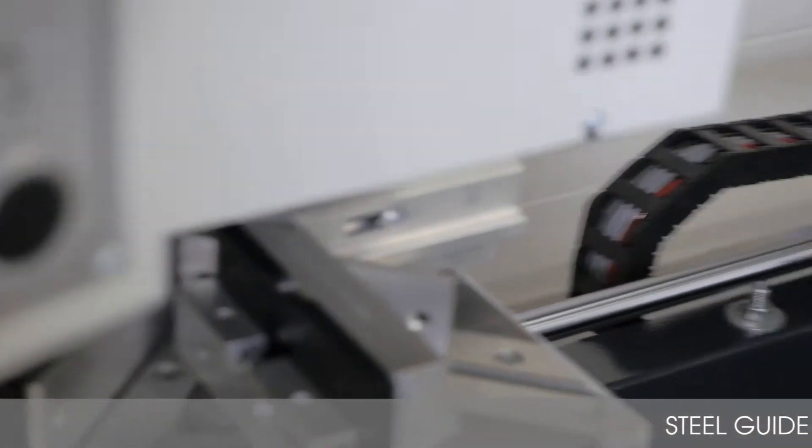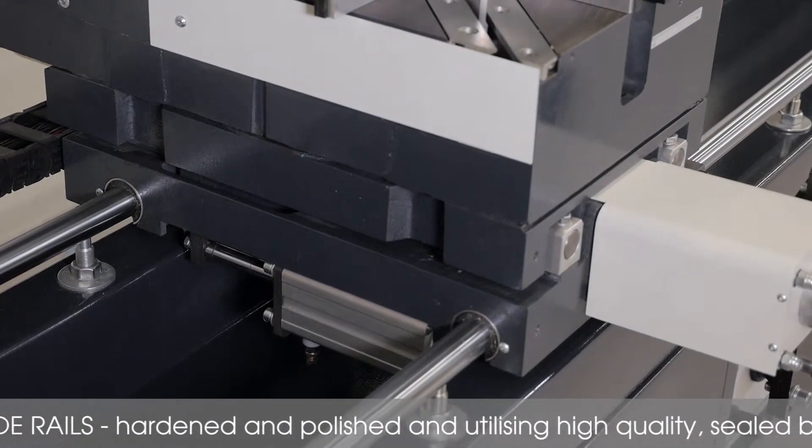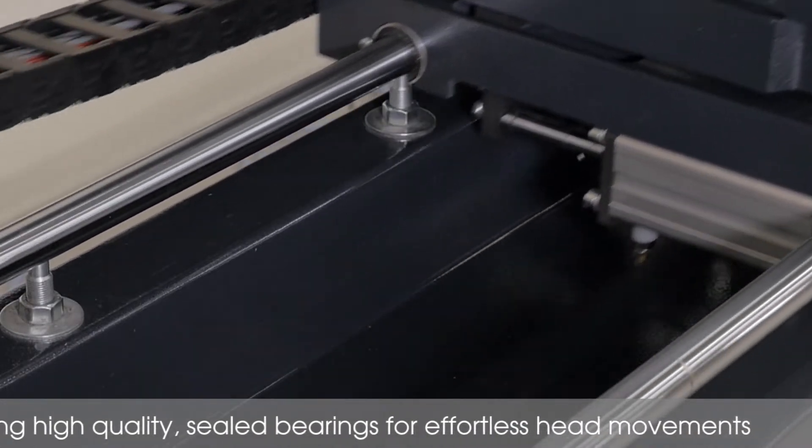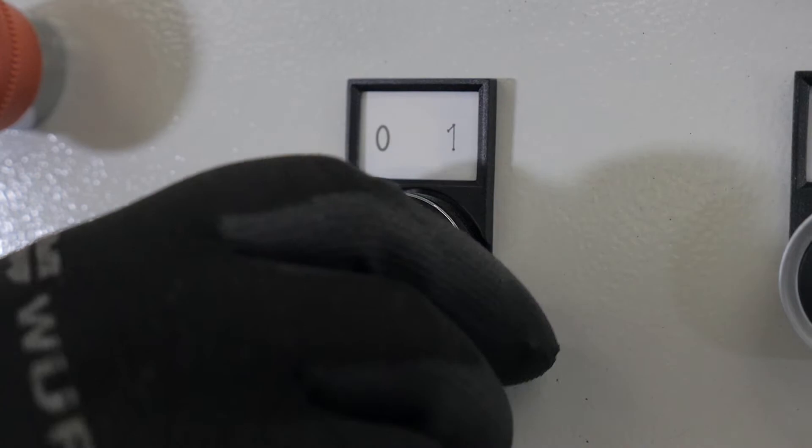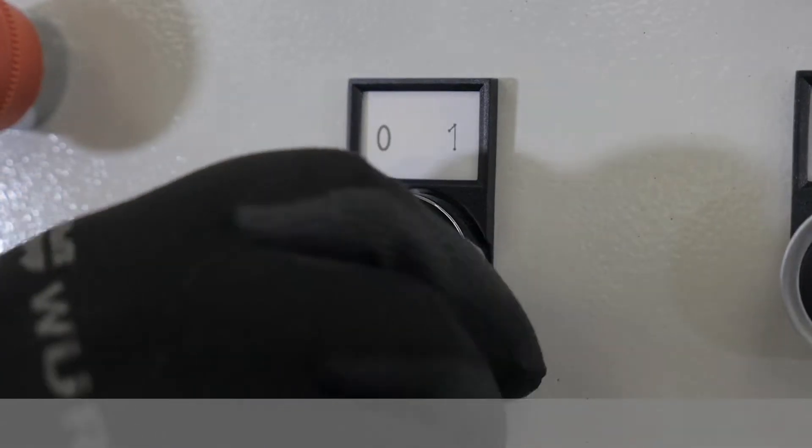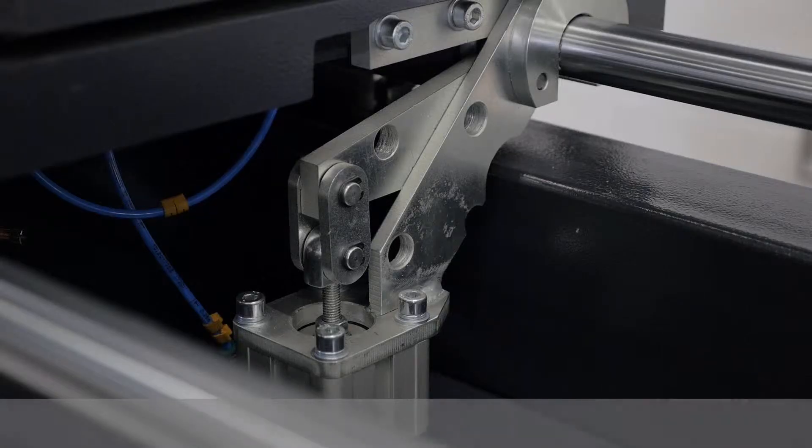The welding heads are mounted on hardened and polished steel guide rails using high quality sealed bearings making the movement of each head effortless. Each head has a pneumatic brake which locks it into position quickly for the welding cycle.